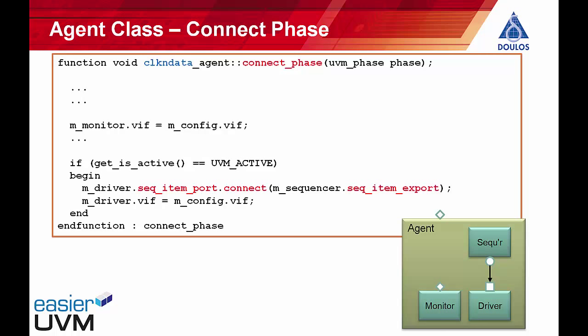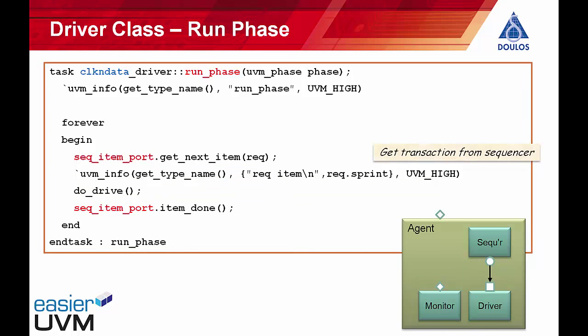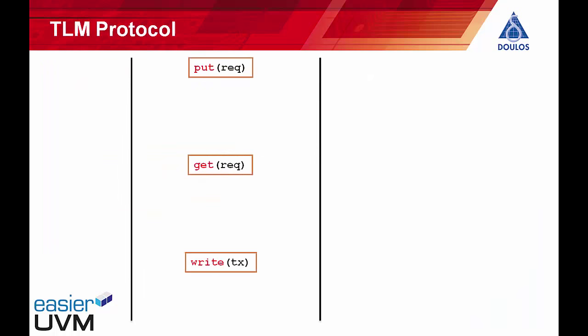Here we've got an agent, and in the connect phase of the agent we can see the connection between the port on the driver and the export on the sequencer. The sequence item port on m_driver is being connected to the sequence item export on m_sequencer, all happening within the connect phase method of our agent. In the run phase of the driver we're calling two methods — get_next_item and item_done — of the sequence item port. The TLM connections in UVM have certain rules; they have a certain protocol.